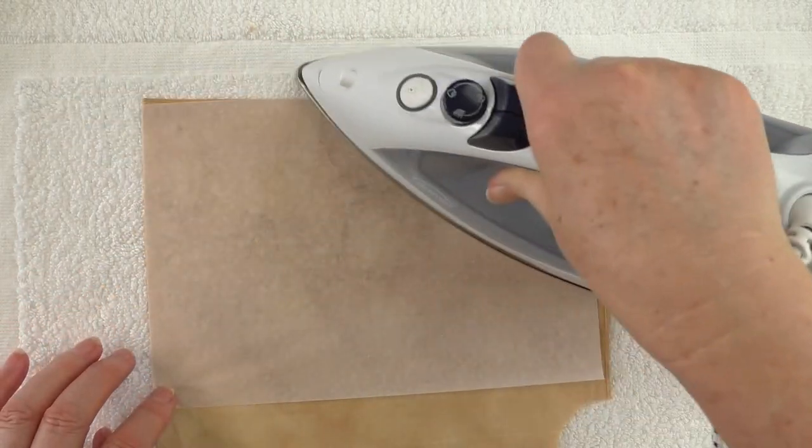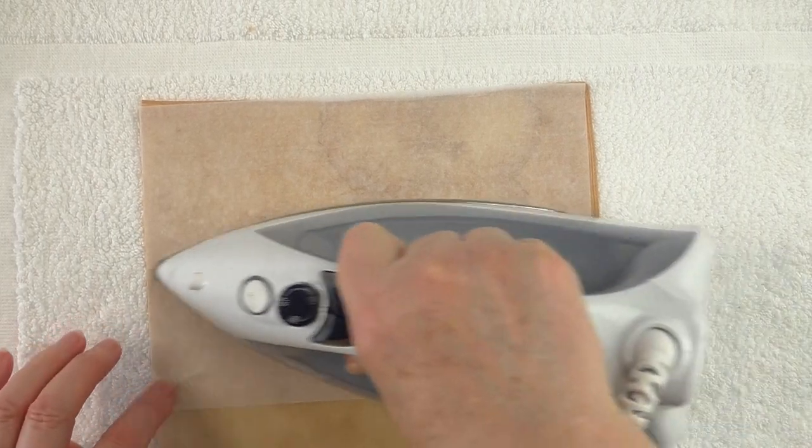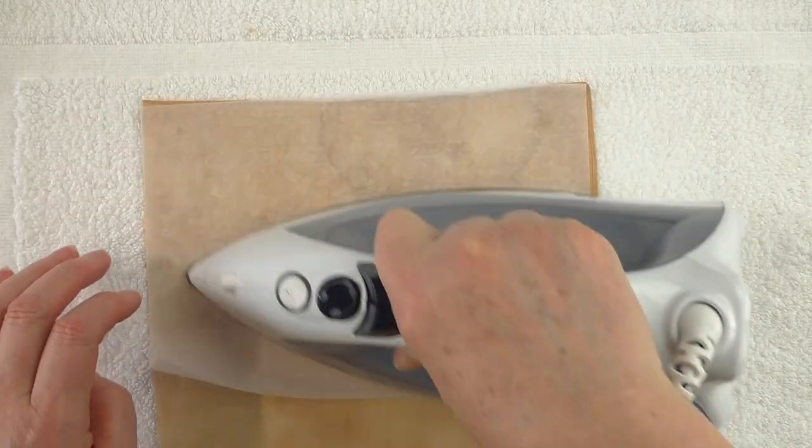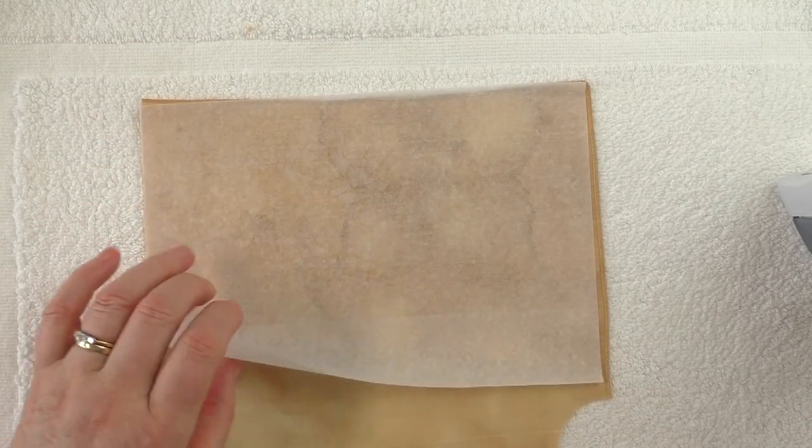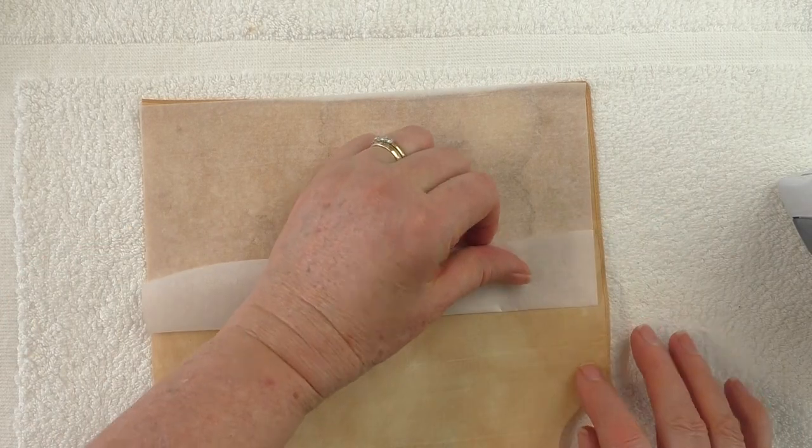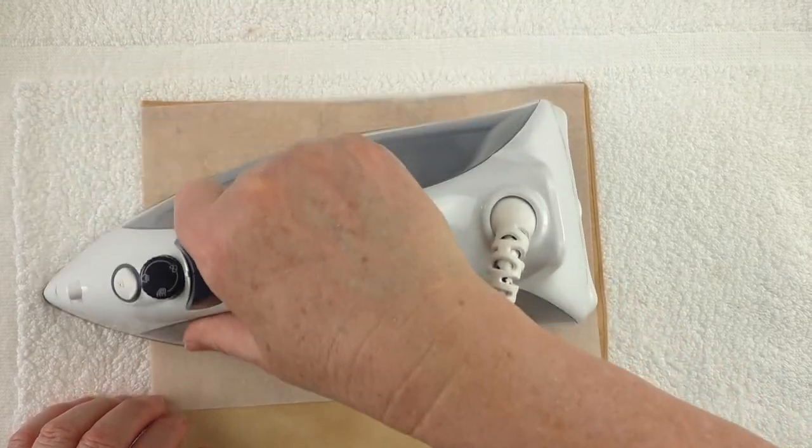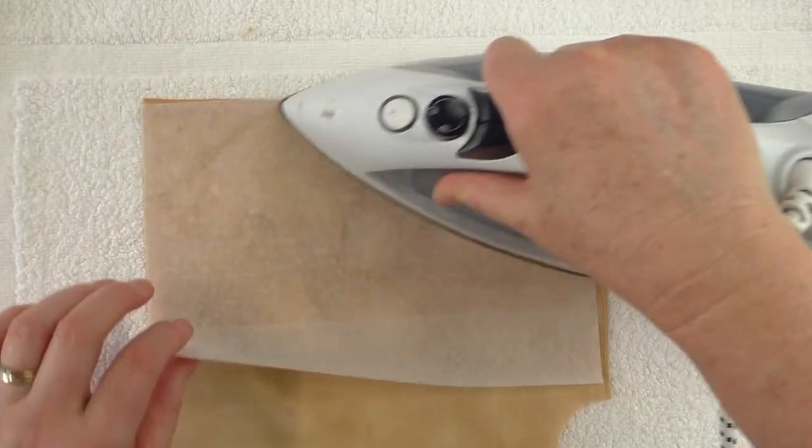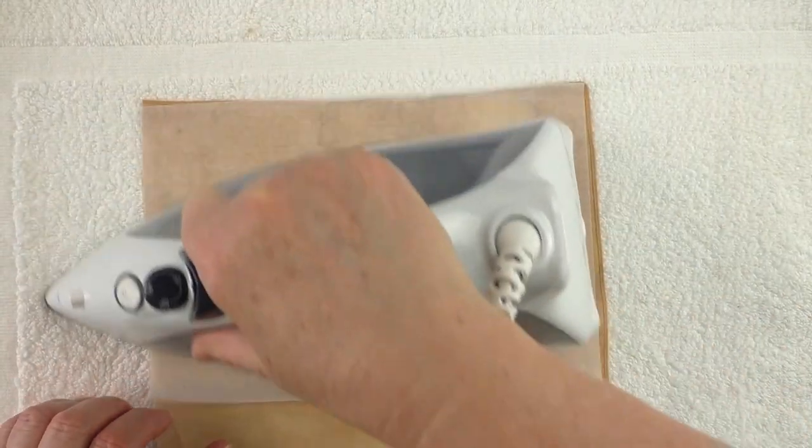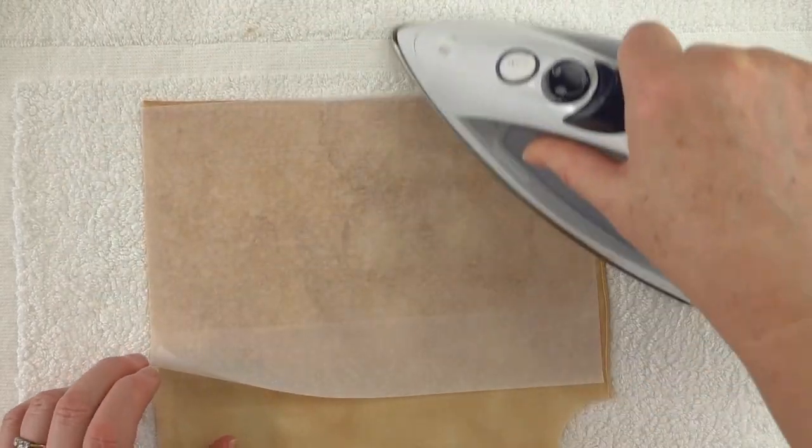And just iron that on as well. You can sort of see there, where it's changed color a bit. That's where it's fused, and that's where it's free. And I can just remove that bit later on. Make sure it's on there. Good.